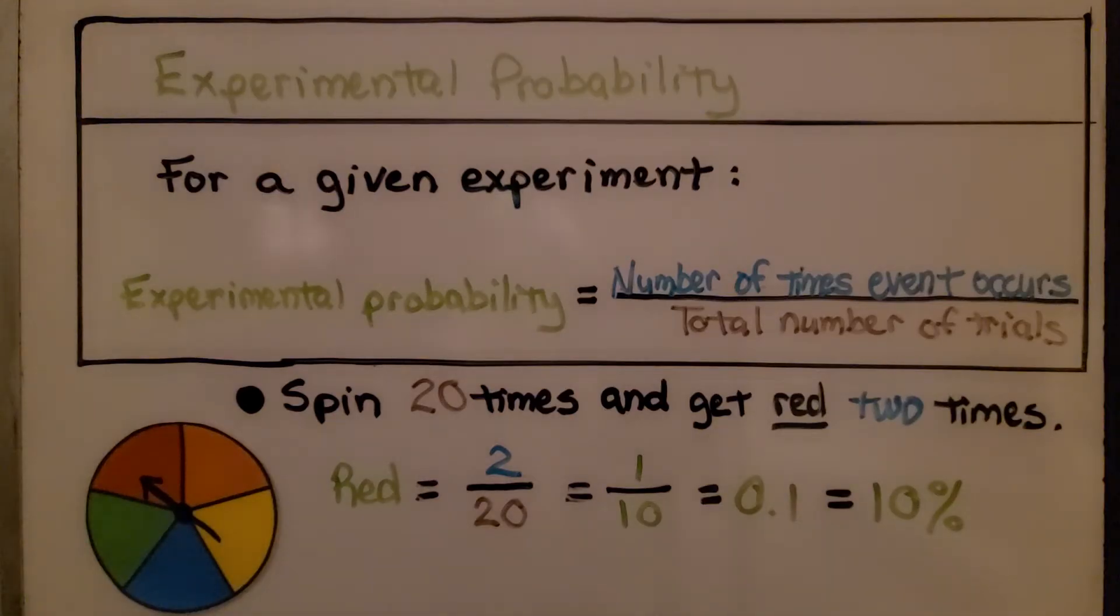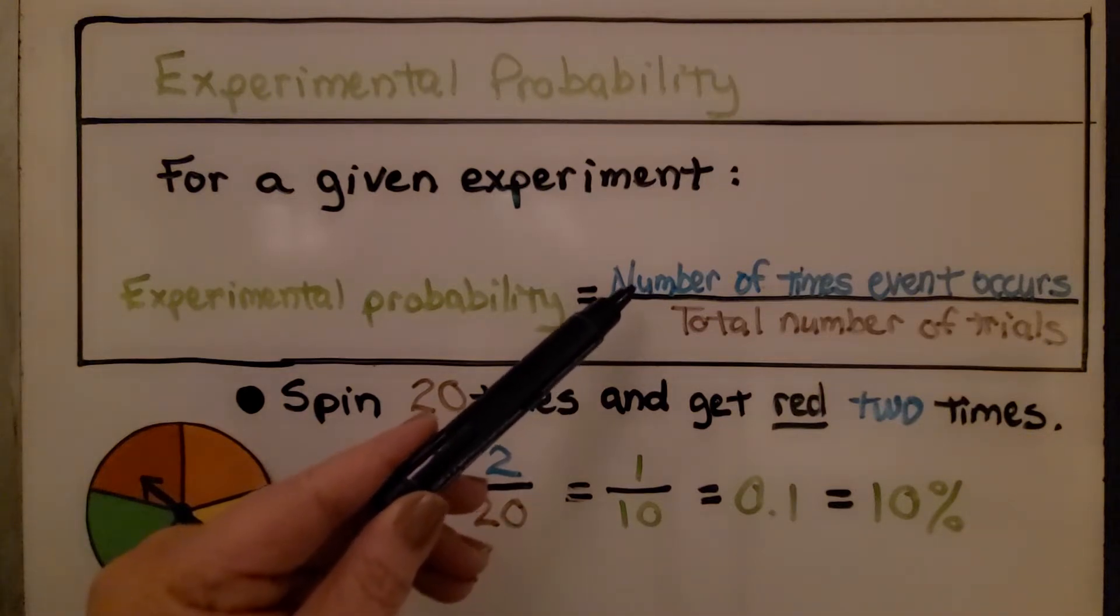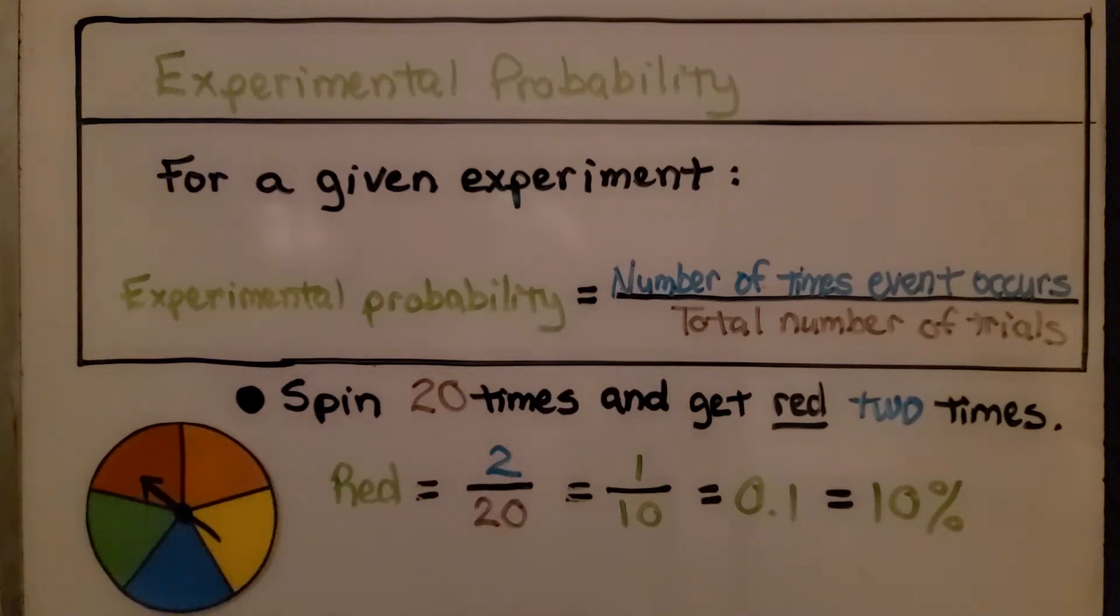As we've learned in the last couple of parts of this video, experimental probability is the number of times the event occurs over the total number of trials as a ratio. If we spin twenty times and get red two times, the experimental probability of getting red is two twentieths, which we can simplify to one tenth. We could even put a zero here and make it ten hundredths, and we can write it as a percent as ten percent.